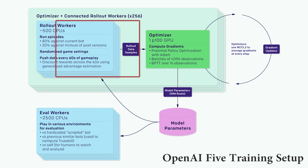General policy optimization methods usually start by defining the policy gradient loss as the expectation over the log of the policy actions times an estimate of the advantage function. The first term, Pi Theta, is our policy — a neural network that takes the observed states from the environment as input and suggests actions to take as output. The second term is the advantage function A, which tries to estimate the relative value of the selected action in the current state.